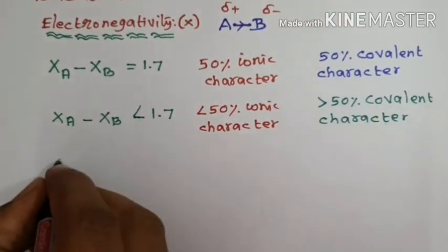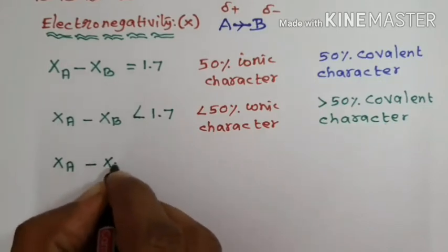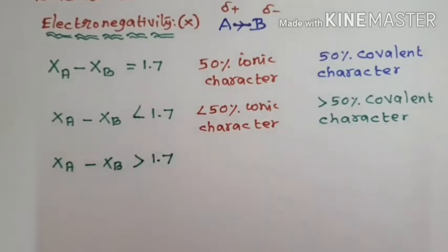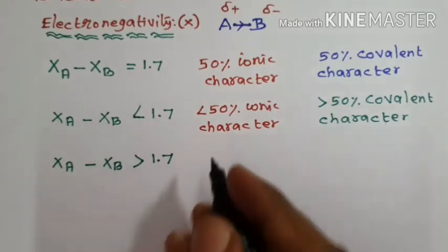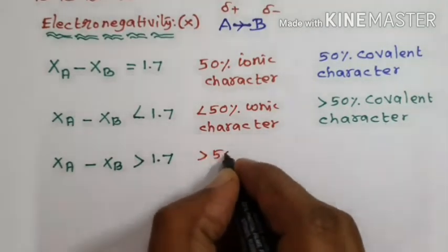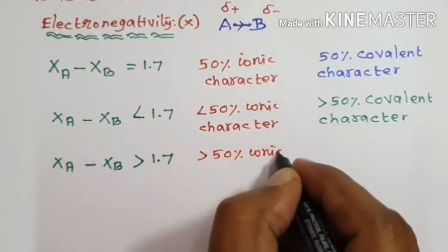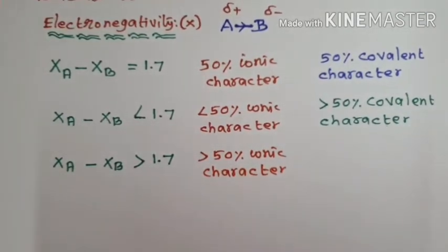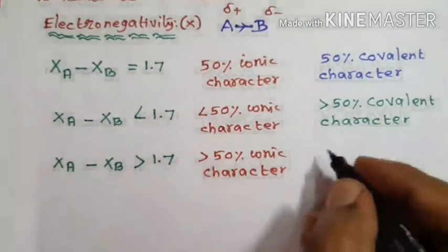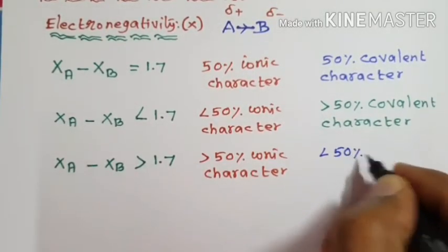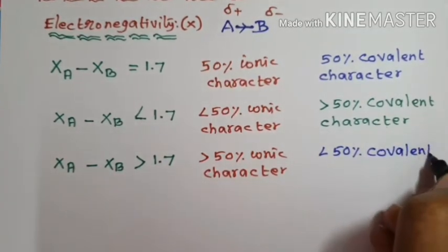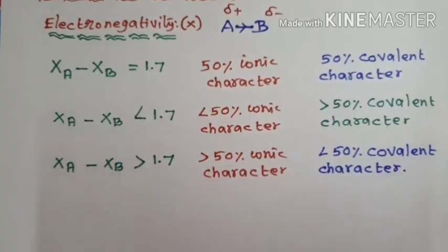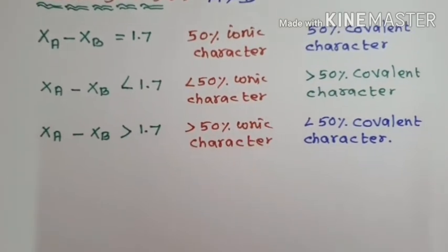The third condition: if the electronegativity difference between two atoms in a molecule is greater than 1.7, then the molecule has greater than 50% ionic character and less than 50% covalent character.